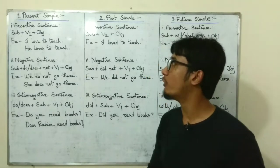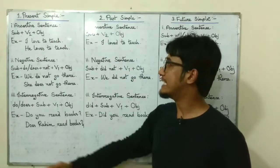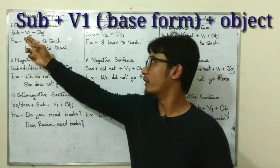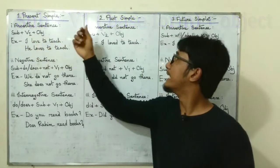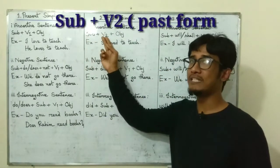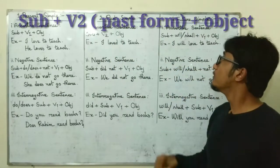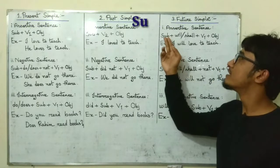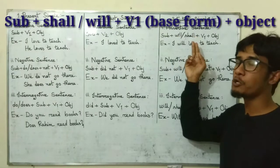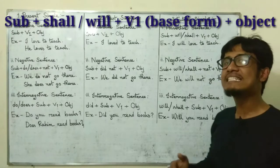So let's begin. First of all, in present simple's assertive sentence the structure is subject plus V1, which is the base form of a verb, plus object. In past simple the structure is subject plus V2, which is the past form of a verb, and then an object. And in future simple the structure is subject plus will or shall plus V1, which is the base form of a verb, and finally an object. So let's see some examples.